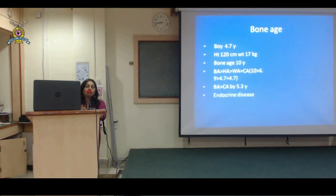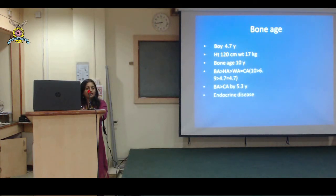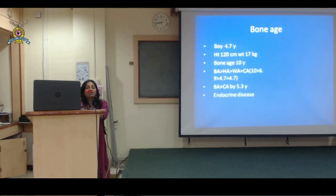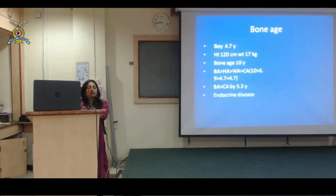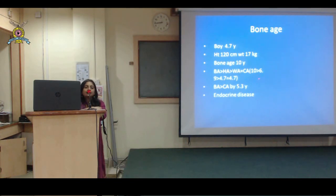For example, a boy around 5 years with height 120 cm and weight 17 kg - bone age was found to be 10 years. So a boy of chronological age around 4.7 years has a bone age of 10 years - advanced by 5.3 years. We found bone age was very much advanced, followed by height age, followed by weight age which was equal to chronological age. Based on this equation, we can strongly say it is an endocrine disorder.